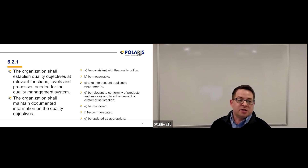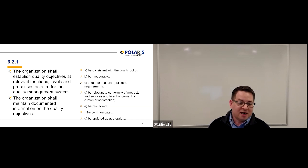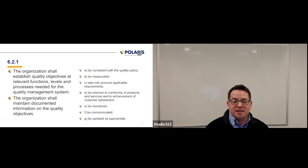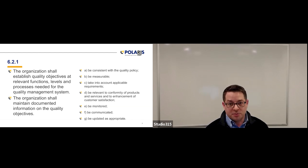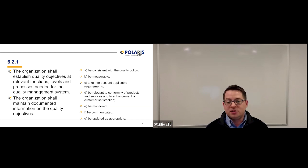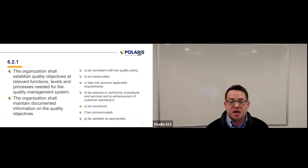So, what does ISO 9001 say? Well, it says the organization shall establish quality objectives at relevant functions, levels, and processes. It also says that the organization shall maintain documented information on those quality objectives. And those documented requirements are listed. They have to be consistent with your quality policy. They have to be measurable.